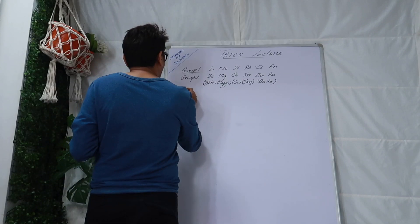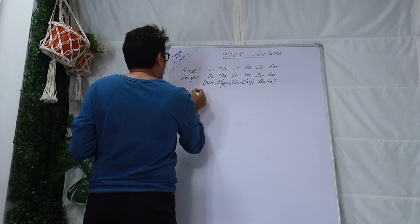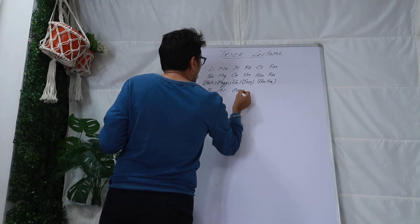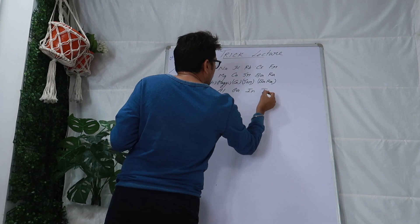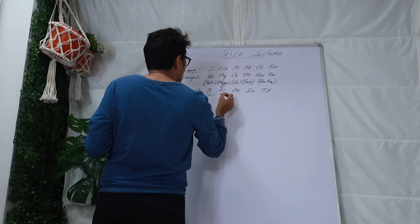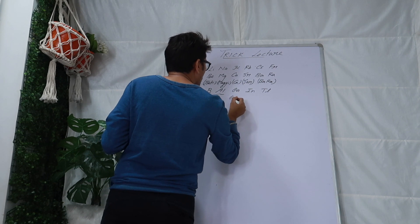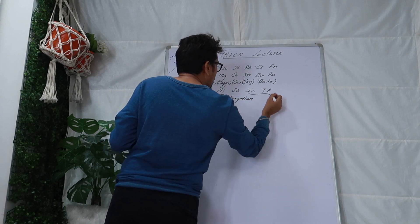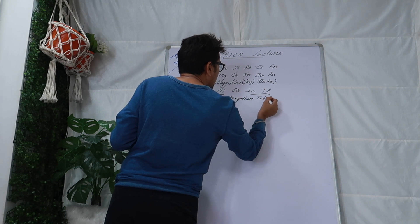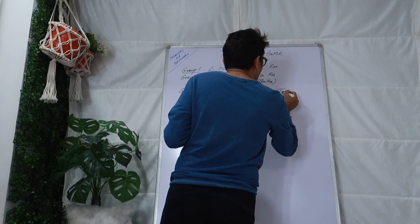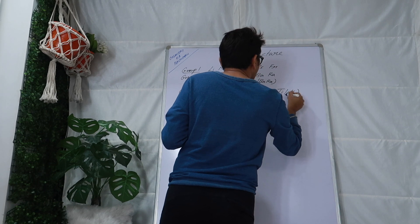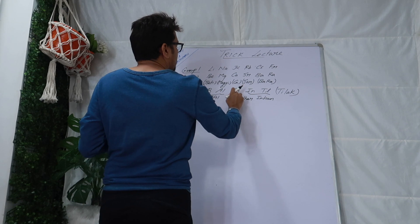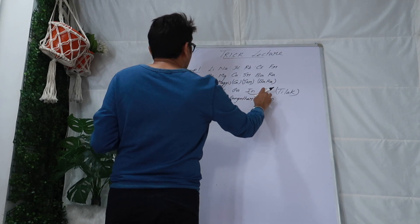Then you go straight to group 13. Group 13 mnemonic is: Baal Gangadha Indian Tilak. Baal is boron, Gangadha is aluminium, Indian is indium, and Tilak is thallium. Wait — so the full group 13 is: boron, aluminium, gallium, indium, thallium.